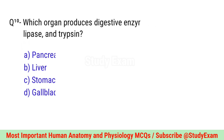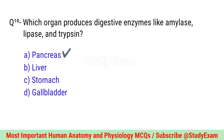Question number ten. Which organ produces digestive enzymes like amylase, lipase and trypsin? Correct option is A. Pancreas.